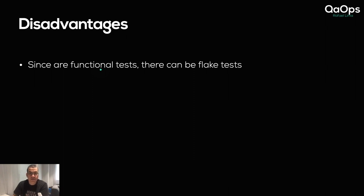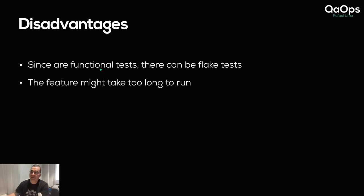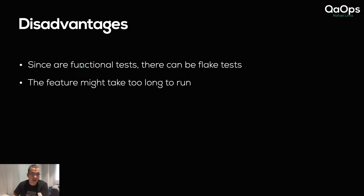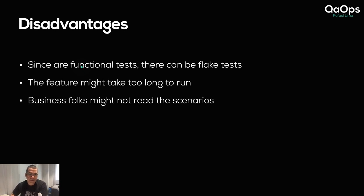Now the disadvantages. Most of the time BDD is used as functional tests, and functional tests can be flaky — especially if they are UI tests because you have to deal with waits. The feature suite might take too long to run because most of the time they're used as functional tests, so you're going to have a lot of them. If you have a lot of those, it's going to take a long time to run, and that's not ideal. You want fast feedback so whoever is developing the application has a shorter window to see if their changes broke something.